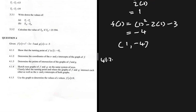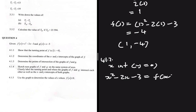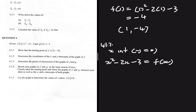4.1.2: Determine the coordinates of the x and y intercepts of the graph of f. For the x intercept, as soon as you hear x intercept, you should be thinking y equals 0. We have f(x) equals x squared minus 2x minus 3. We let y equal 0, giving us x squared minus 2x minus 3 equals 0.